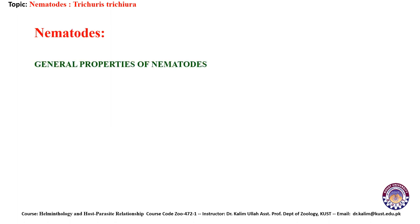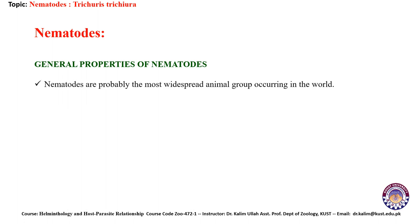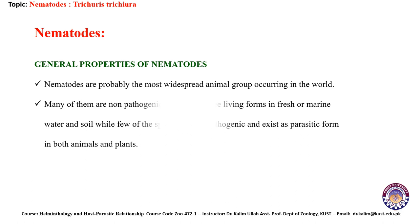First of all, we will study the general properties of nematodes. Nematodes are probably the most widespread animal group occurring in the world. Many of them are non-pathogenic and exist as a free-living form in fresh or marine water and soil, while a few species can be pathogenic and exist as a parasitic form in both plants and animals.